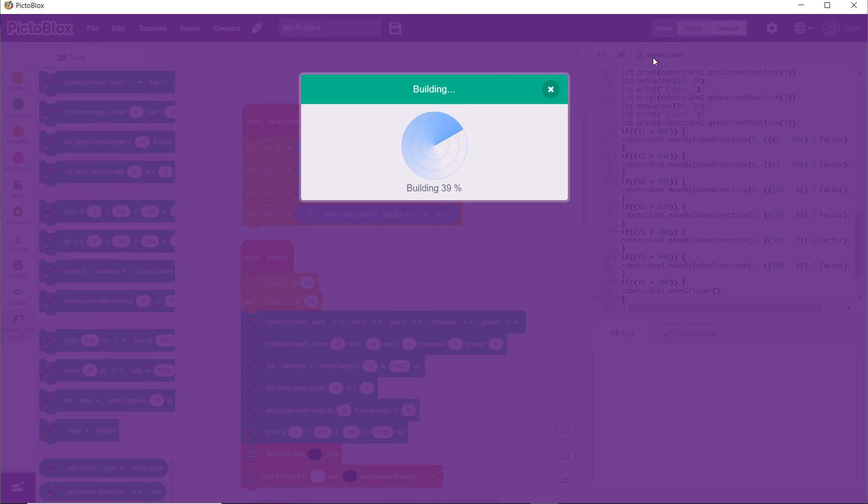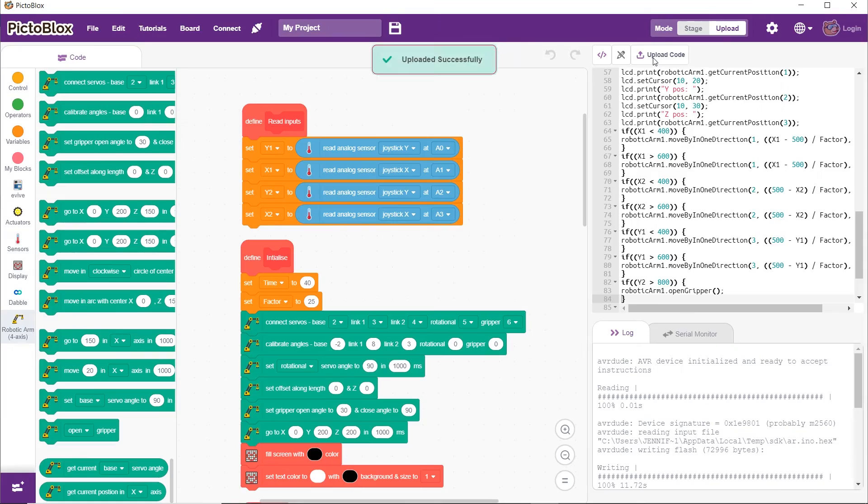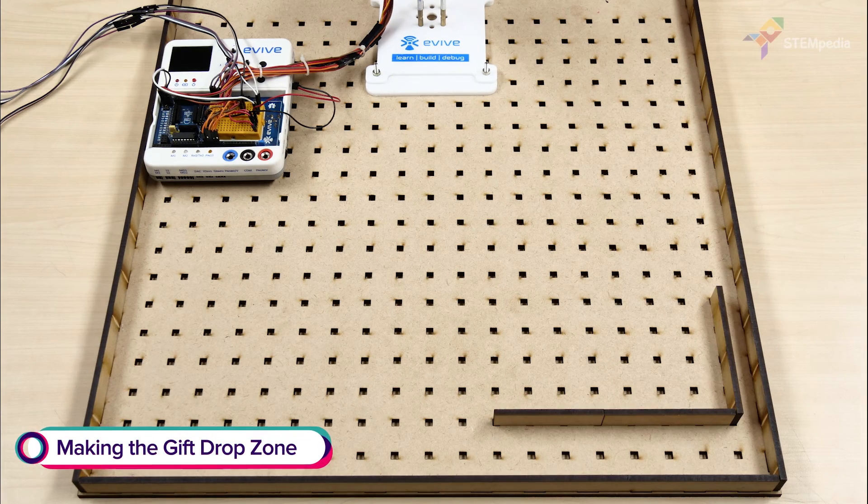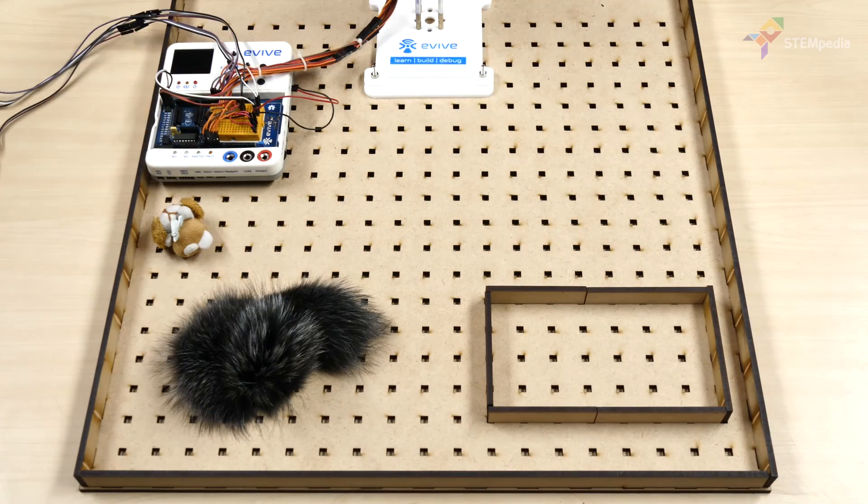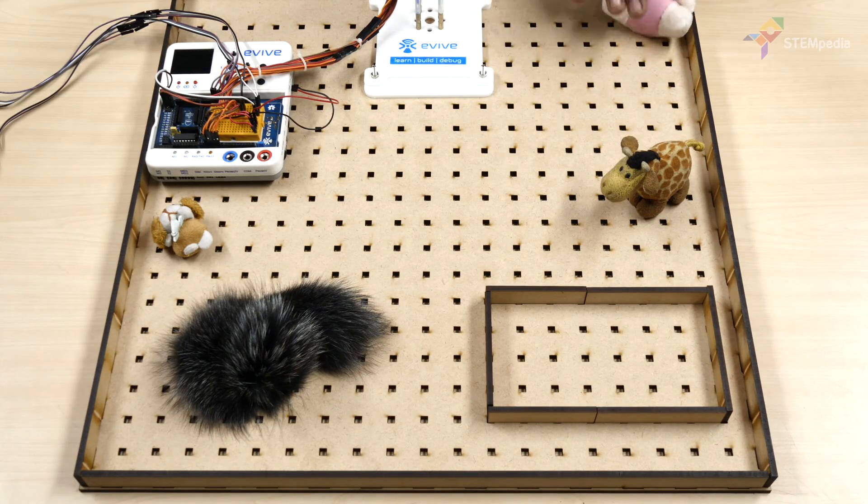Now that the code is done, upload the code to evive. Now, let's make a gift drop zone at one of the corners. Fill the board with gifts and treats of your choice and start playing.